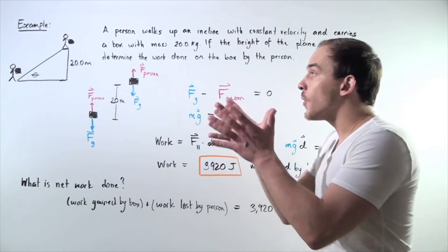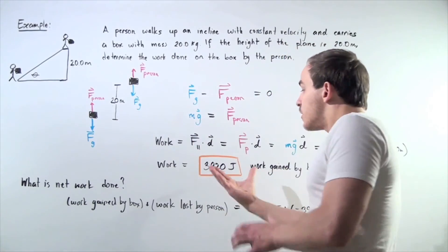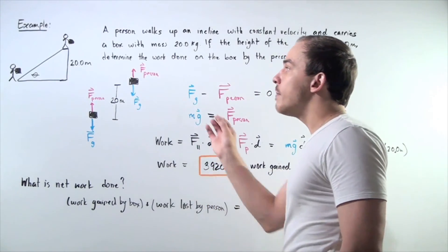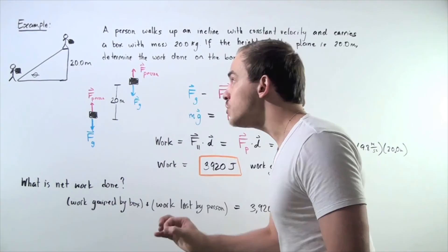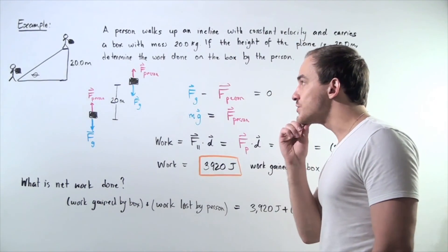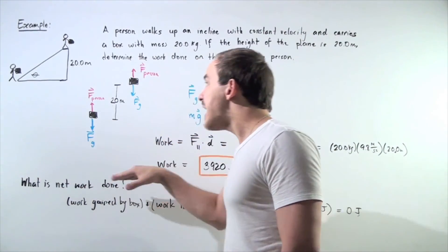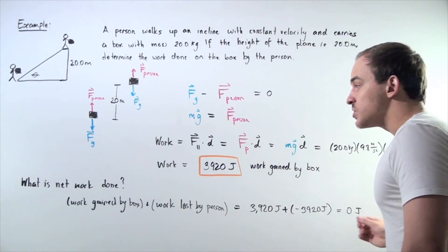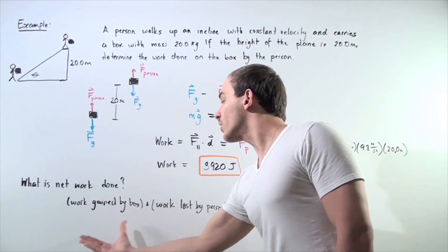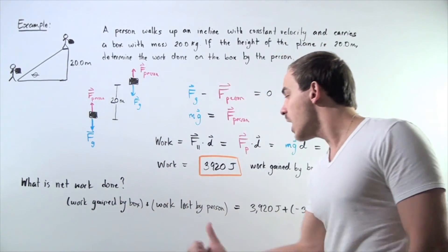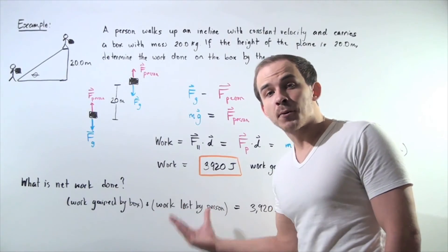In other words, the person gives this many joules to the box and the person loses this many joules. So that means the net force done is zero. The net force is the work gained by the box plus the work lost by the person.